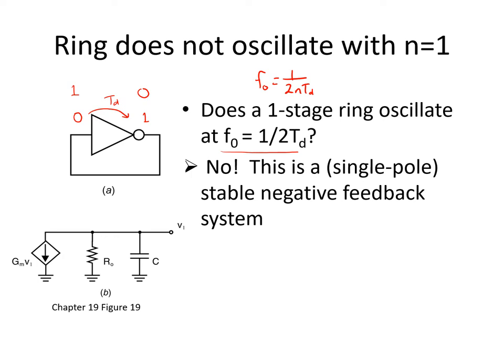In fact, if you took a simple CMOS inverter and connected it in feedback as shown here with a supply voltage VDD, whether in simulation or in the lab, you would observe that the only node in this circuit would settle somewhere around half of VDD, and it would remain there stably. That's because this circuit is a single-pole stable negative feedback system, with a small signal model shown in figure B. In this small signal model, node V1 could simply sit at a small signal value of 0 volts around its operating point, which is somewhere around VDD/2.